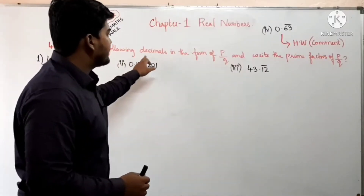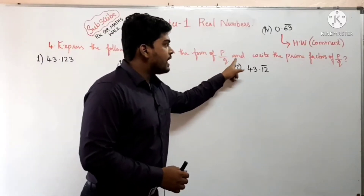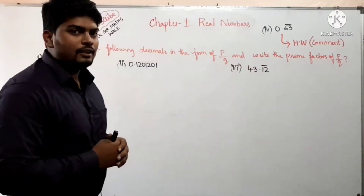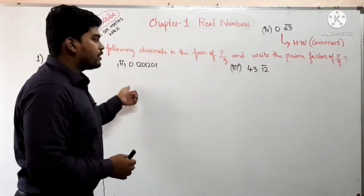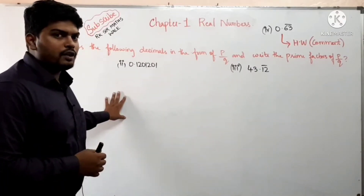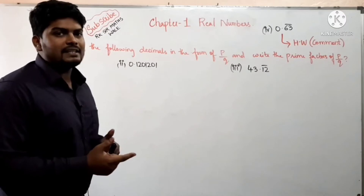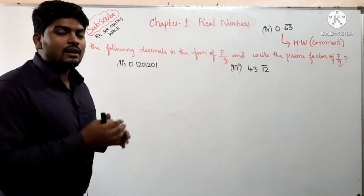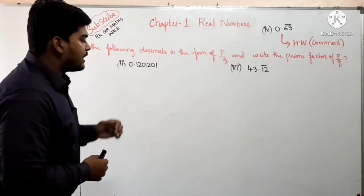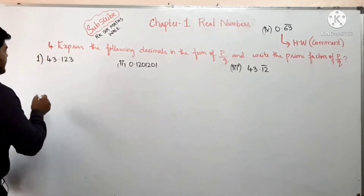Express the following decimals in the form of p by q and write the prime factors of q. इस question को आपने 9th में भी solve किया होगा। यह बहुत important question होता है जहाँ पर आपको एक repeating decimal दिया जाएगा, उसको आपको p by q form में convert करना रहता है। तो आईए सबसे पहले यहाँ पर देख लेते हैं।